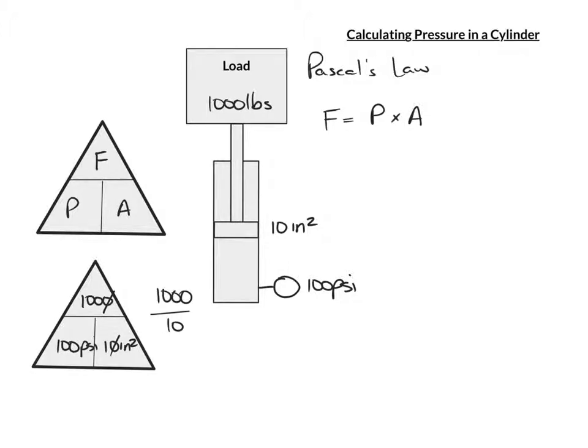Notice it doesn't matter where the piston is in the cylinder, the 100 psi is always going to be there. It has everything to do with the area of the piston and not to do with where that piston is in the cylinder.